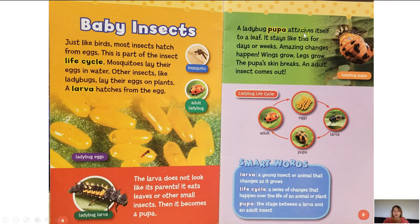A ladybug pupa attaches itself to a leaf and stays like this for days or weeks. Amazing changes happen: wings grow, legs grow, the pupa's skin breaks, and an adult insect comes out. This is a ladybug pupa — we can see it's starting to take more form of a ladybug as far as its colors and spots. It's more round and different than the ladybug larva.